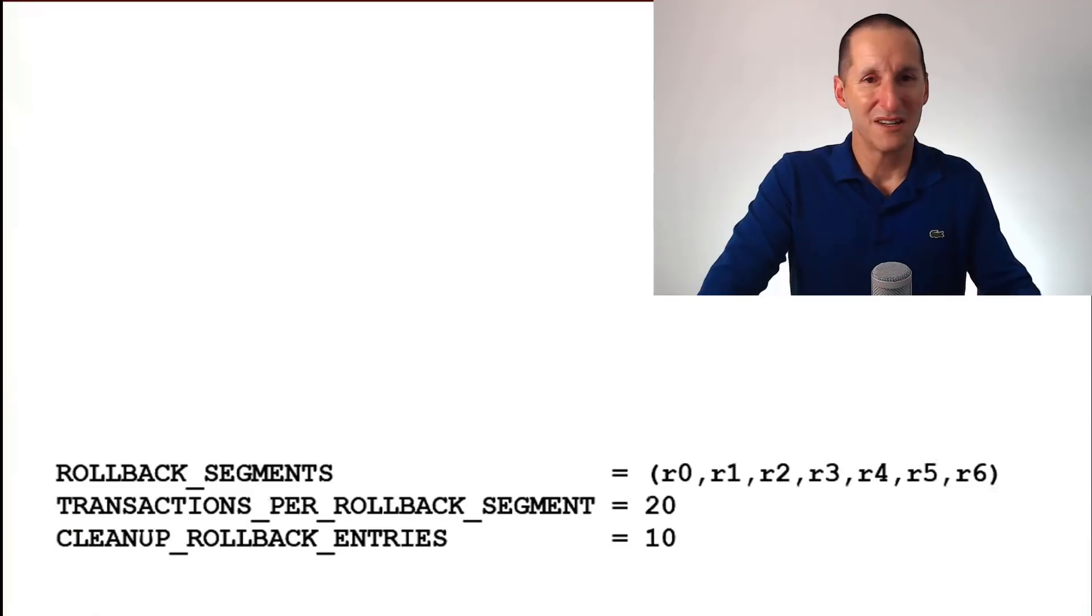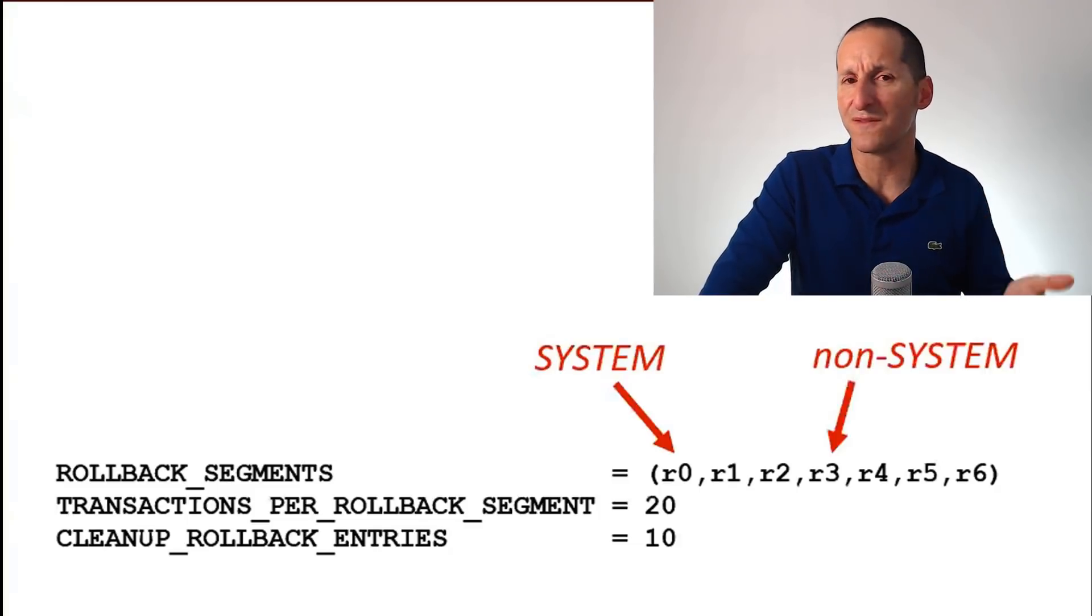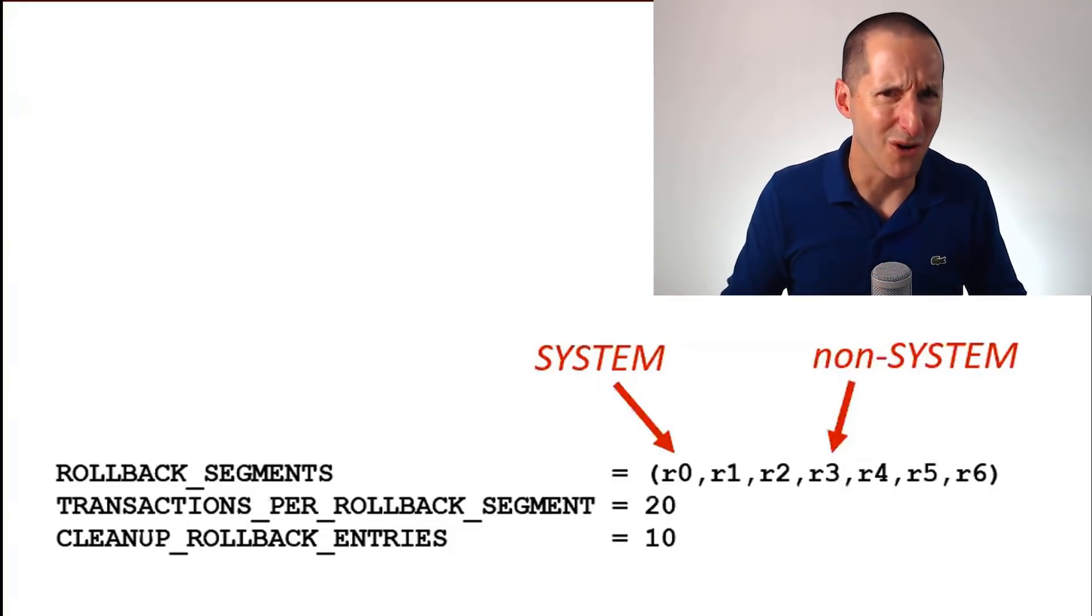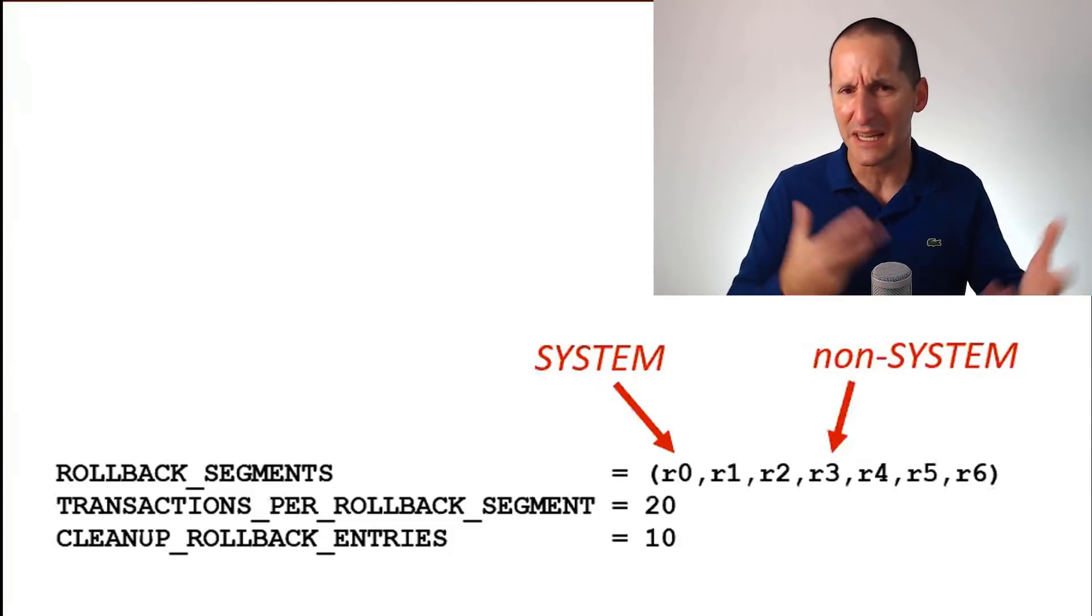Let's have another trip down memory lane. Who remembers these things? Do you remember setting these parameters in the database? You used to have to set the rollback segments parameter. You had to make sure the first one was in the system tablespace, all the others would be in a non-system tablespace. You'd set transactions per rollback segment to nominate the spread and clean up entries. There were all sorts of things you had to do to look after rollback segments.